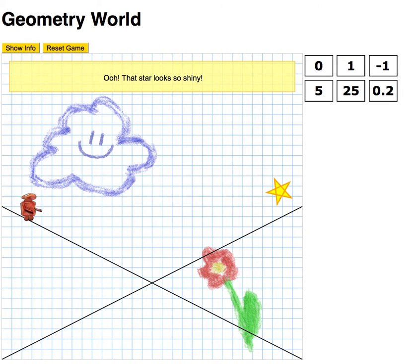It's called Geometry World, and you play this little robot moving with the arrow keys. He jumps.